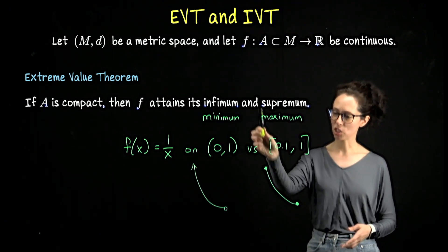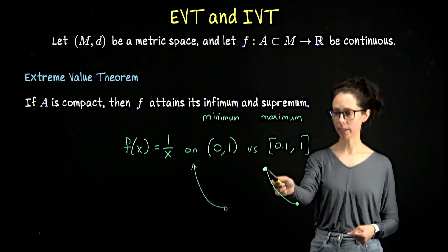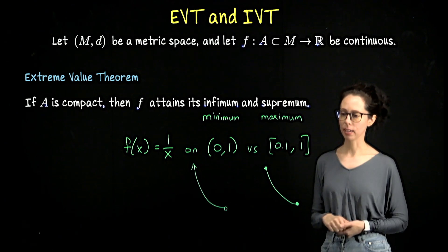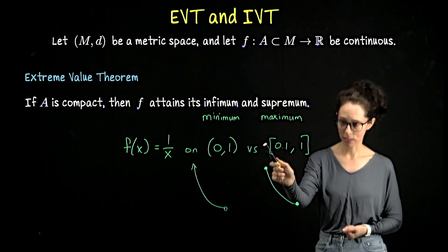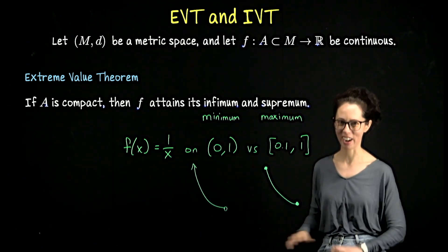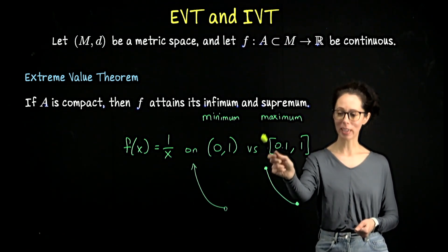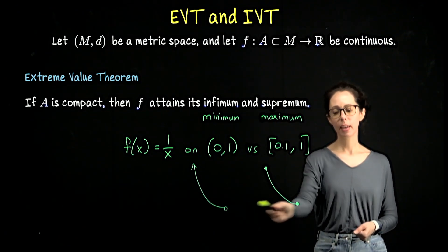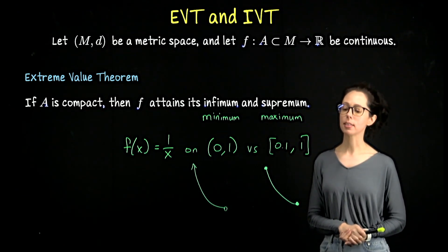On the other hand, if I chop off my domain, so here again x is 0.1, so f(x) is 10. This is a supremum for the set of outputs over this domain, and it's actually attained. We hit this output value, and likewise what was an infimum now belongs to the set of outputs and it's an actual minimum.